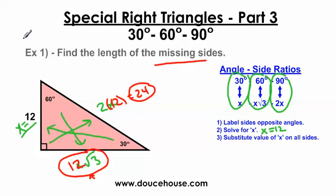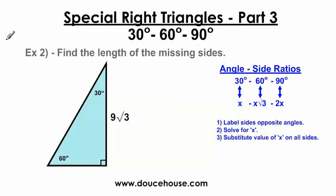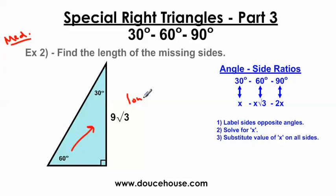I would call this one probably one of the easier problems when it comes to 30-60-90 problems. This next one, example 2, I would say is a medium level problem. Find the length of the missing sides. Which side am I given here? Opposite the 60-degree angle, we're given the long leg. So we need to find the length of the short leg and the length of the hypotenuse.